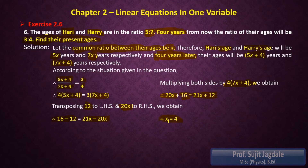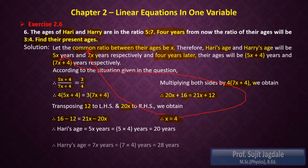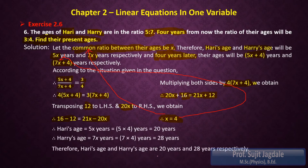Therefore we get the direct value of x which is 4. Now putting this value into the present ages — the first person's present age is 5x and the second person's present age is 7x — we get 5 times 4 equals 20 years and 7 times 4 equals 28 years respectively. These are the present ages of the two persons.